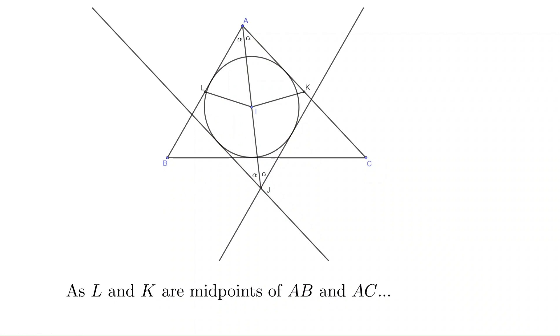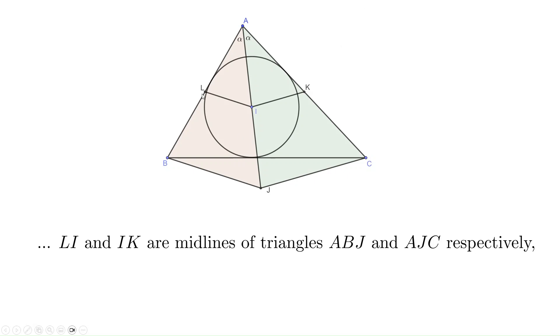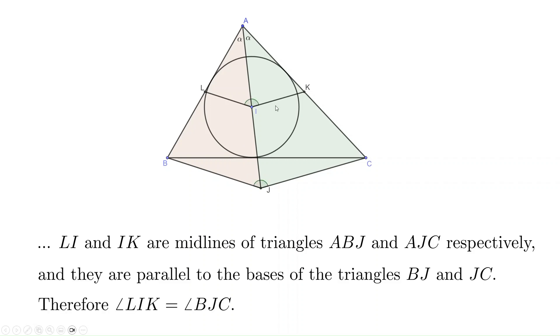We have another couple of midpoints. L is the midpoint of AB and K is the midpoint of AC. I is the midpoint of AJ. As a result, LI and IK are the midlines of triangles ABJ and AJC, respectively. So these two midlines are parallel to their base, respectively. As a result, angle LIK is congruent to angle BJC.